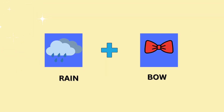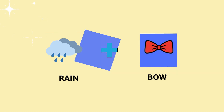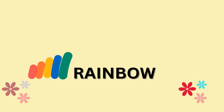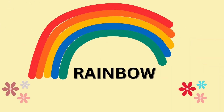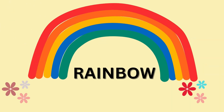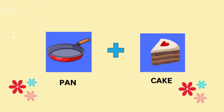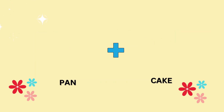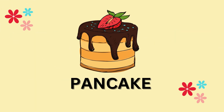Rain plus Bow — it's rainbow. Pan plus Cake — it's pancake.